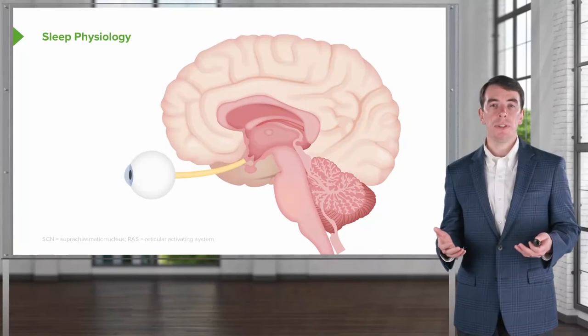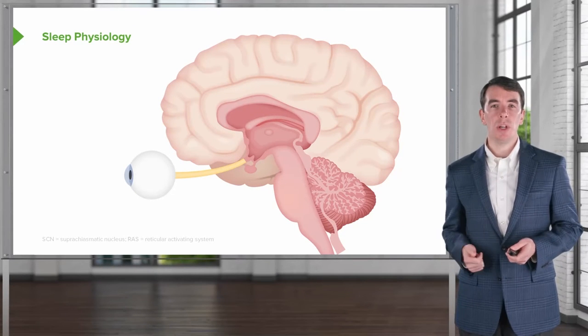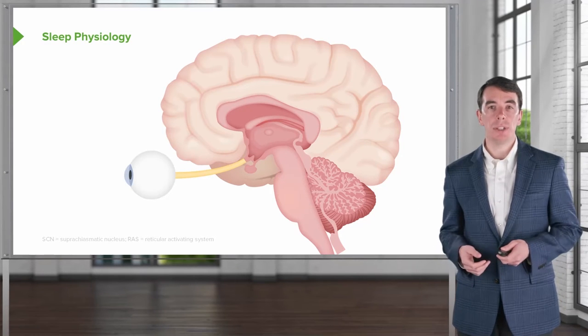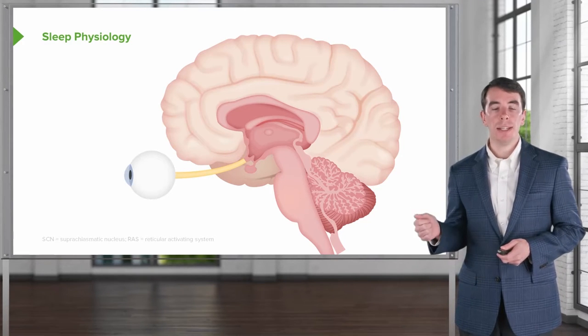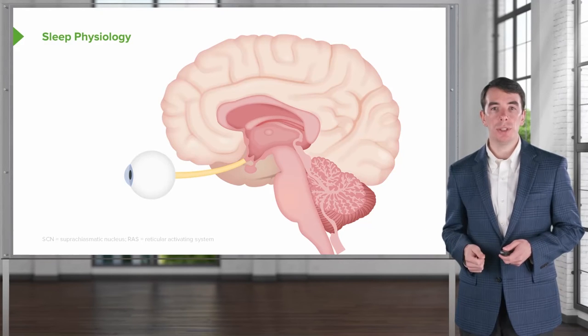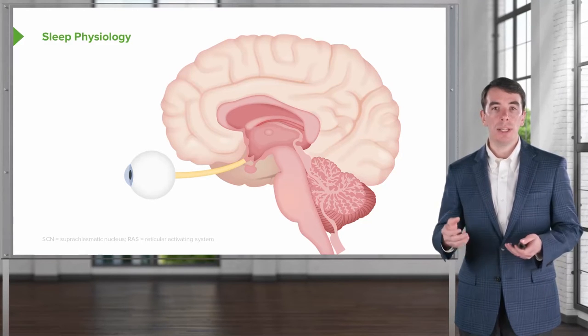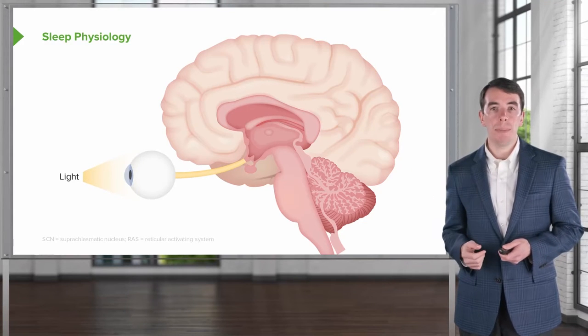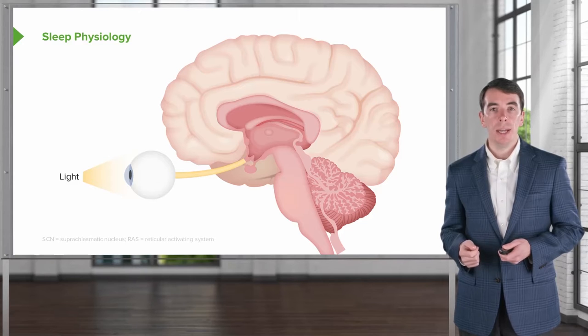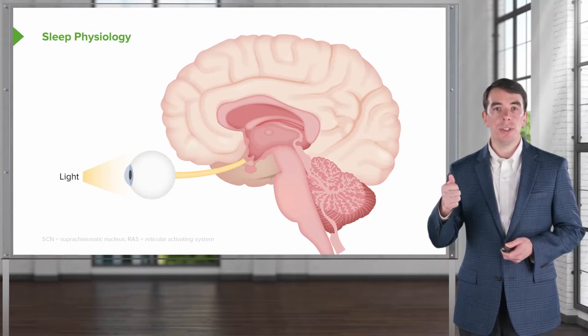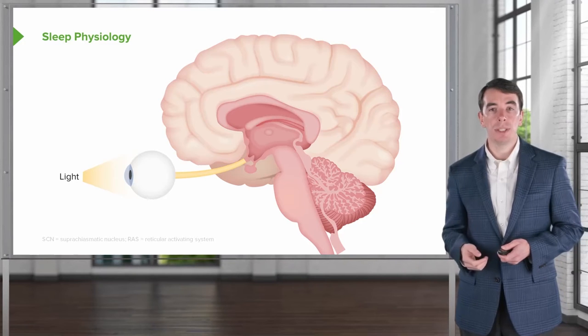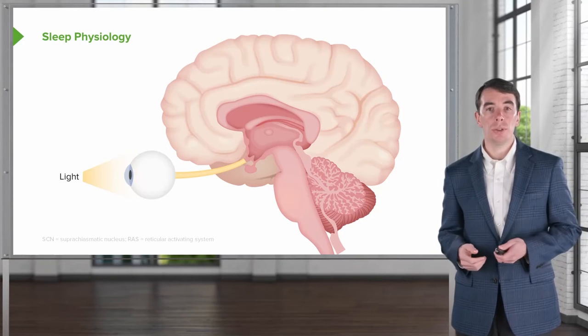So when we think about sleep physiology, one of the things that I want you to take away is how the brain is turned on. How do we wake ourselves up? Well, the suprachiasmatic nucleus of the hypothalamus is critical. In the morning when light hits our eyes or we open our eyes, that light stimulus travels back through the optic nerve to the optic chiasm. And there's a small branch of neurons that send that information up to the suprachiasmatic nucleus of the hypothalamus. And this will ultimately turn the brain on.